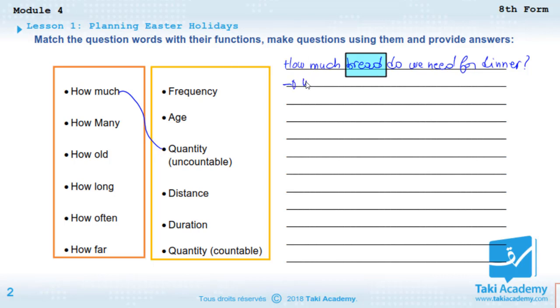So we can say we need two loaves of bread. How many is used to ask about quantity but with countable nouns. For example, I can say, 'How many people have come?' You can answer, '15 people have come.'